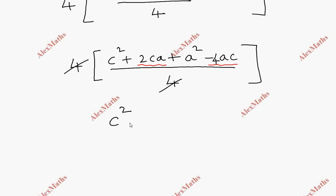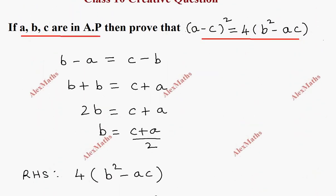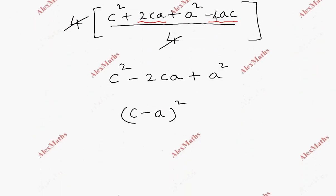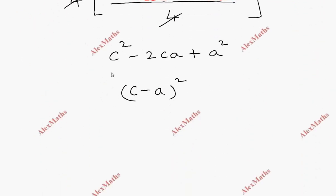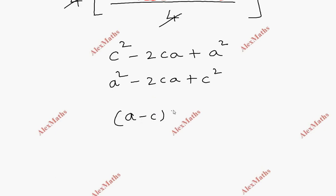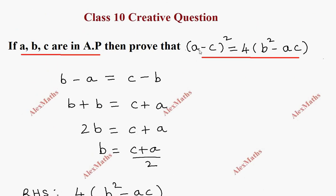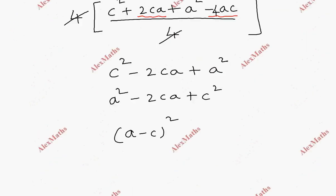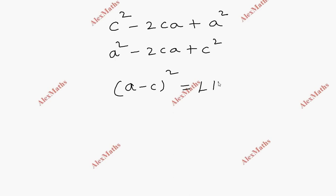Simplifying, this becomes C squared minus 2CA plus A squared, which equals (C minus A) whole squared, or equivalently (A minus C) whole squared. This is equal to LHS. Hence proved.